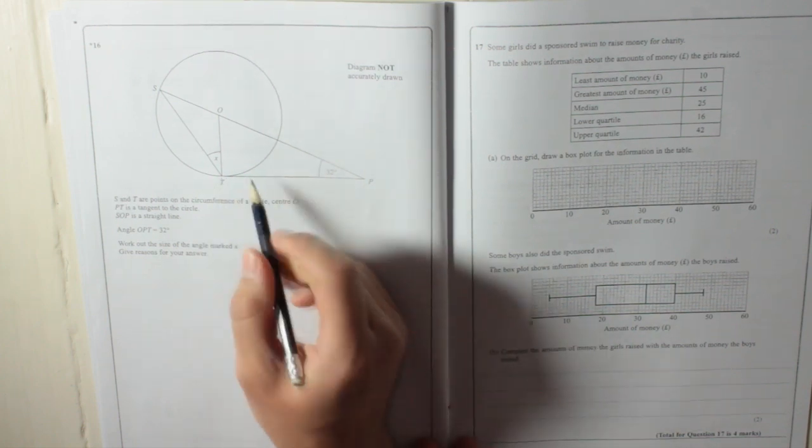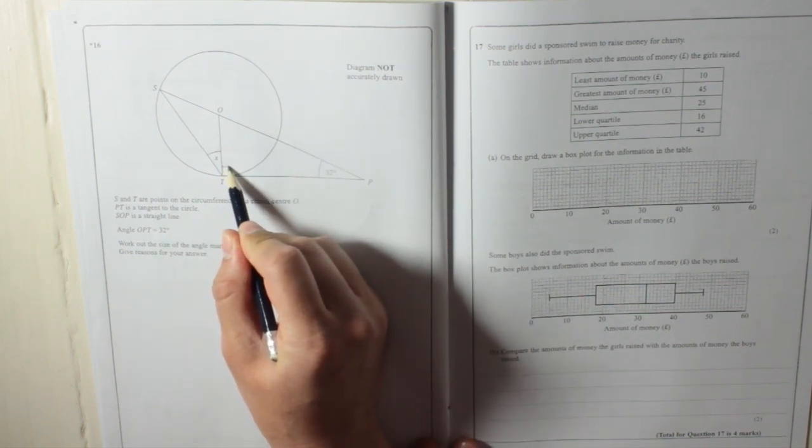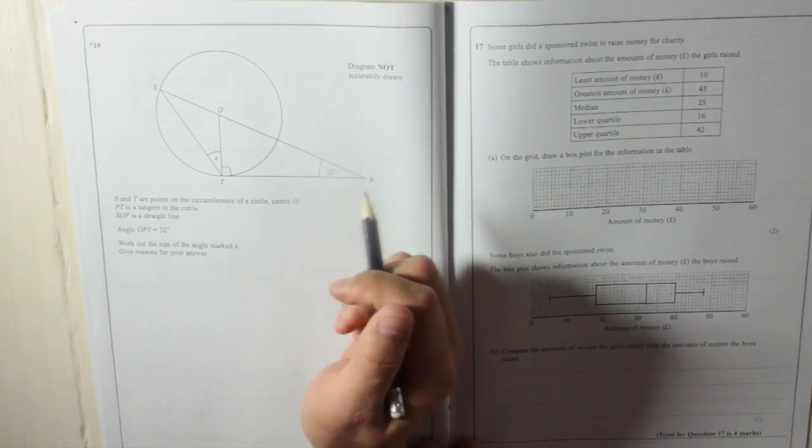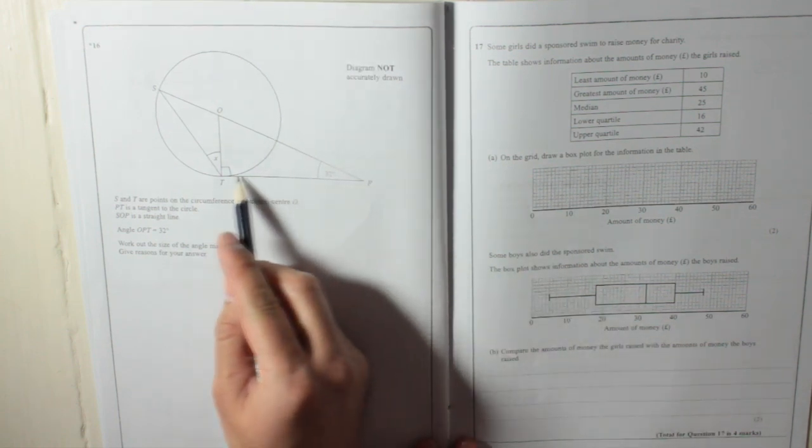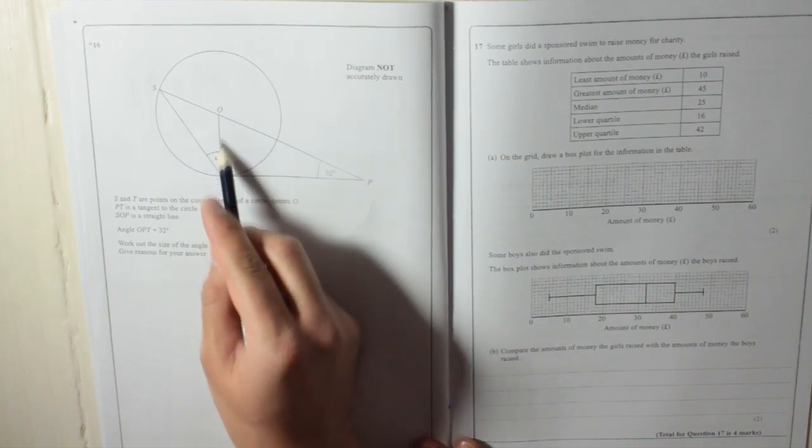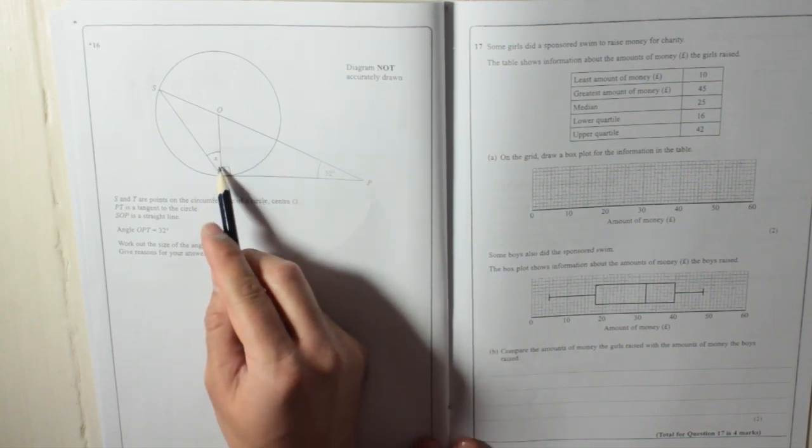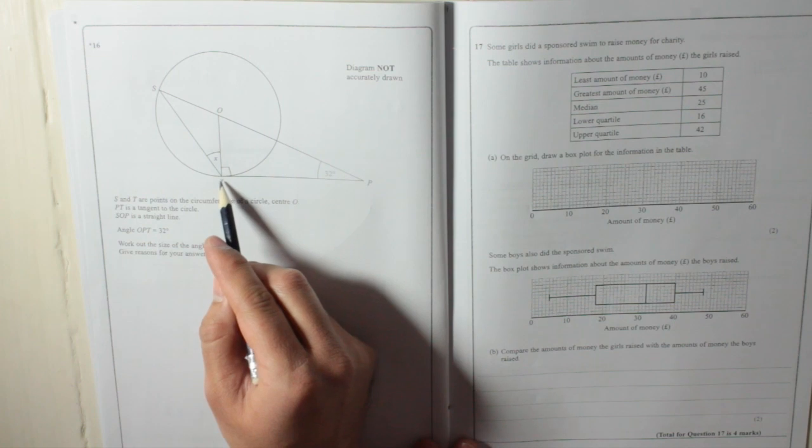Now we know that this is 90 degrees. Why do we know that? Because of the circle theorem that a tangent of a circle and a radius of a circle meet at 90 degrees. They are perpendicular to each other.